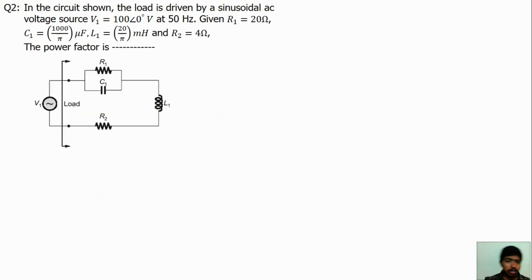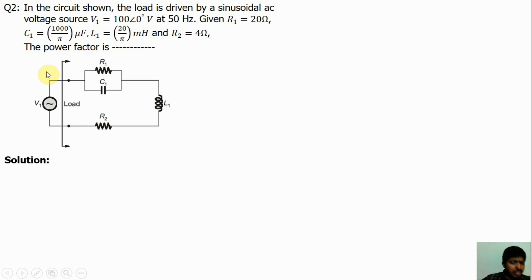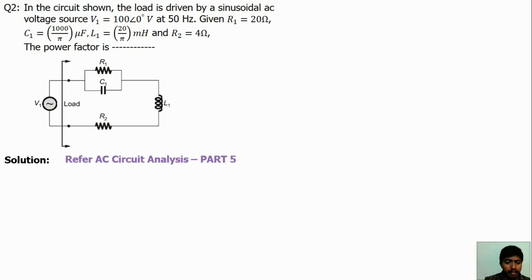Now we will solve the second question. The second question is from AC circuit analysis concepts — how to find the power factor for the given electrical circuit. If we find the input impedance of the circuit, we can find the power factor. For power factor calculations, our first objective is to find the input impedance. If we know the input impedance, we can find the power factor.